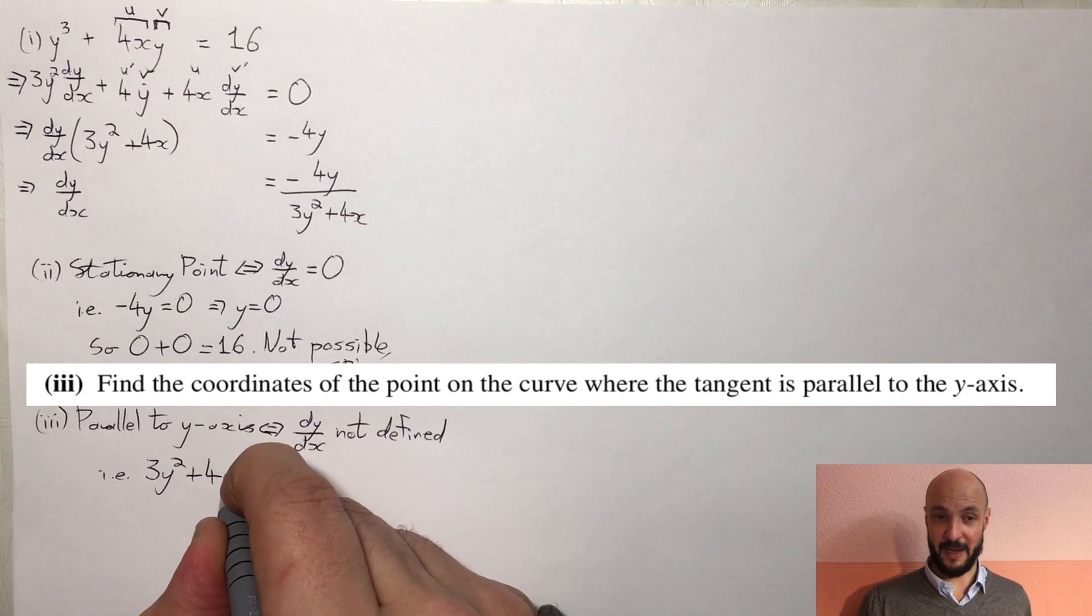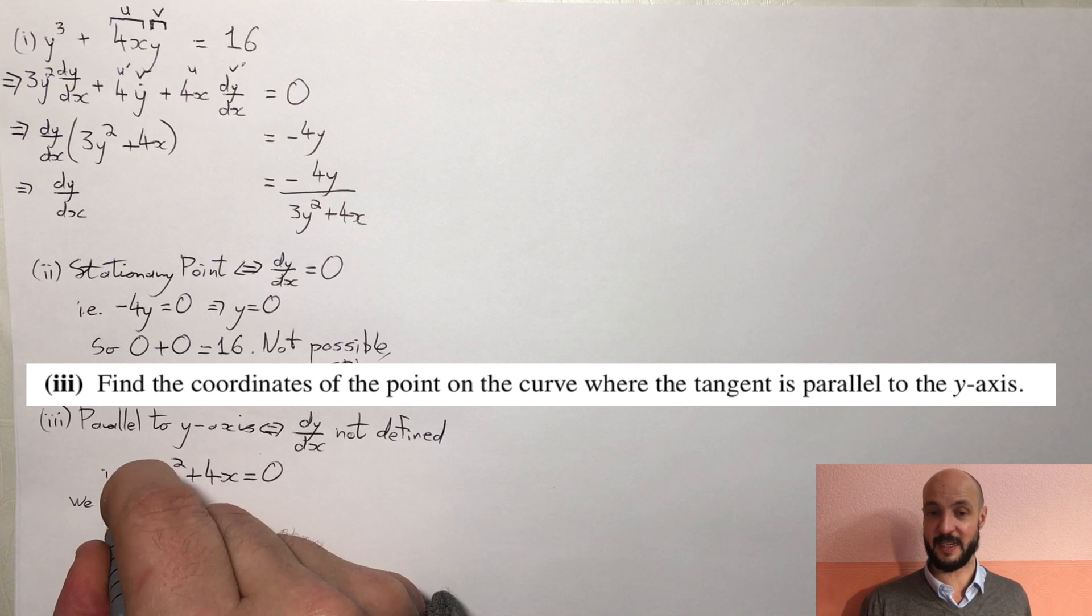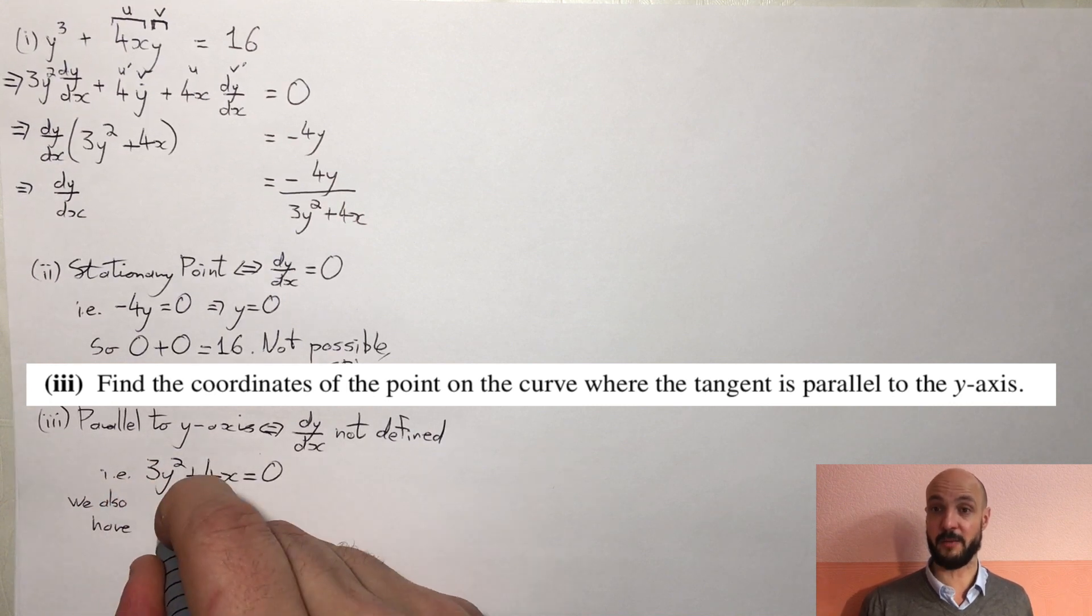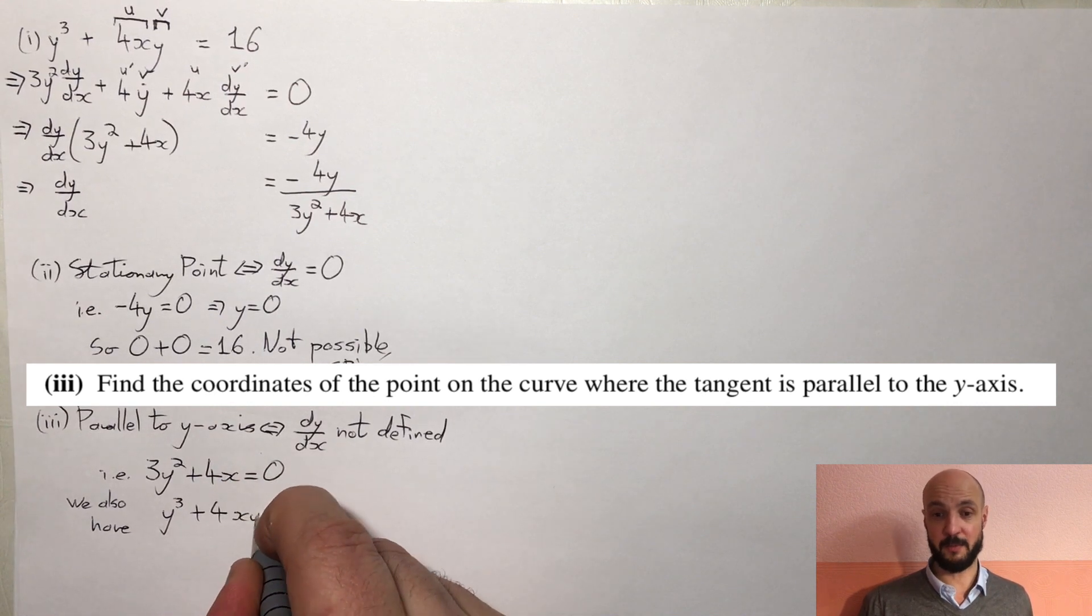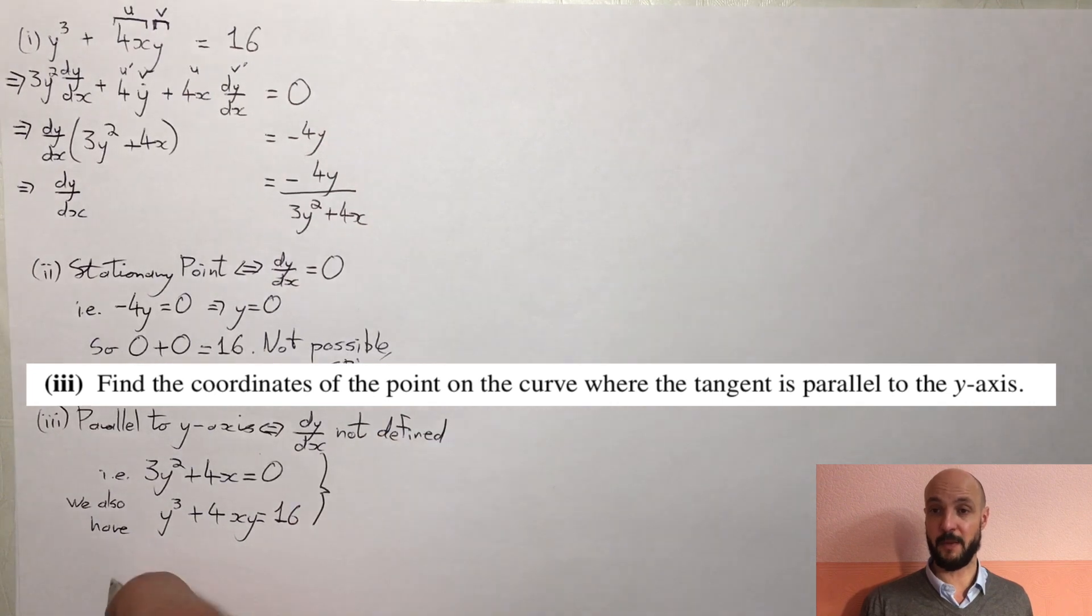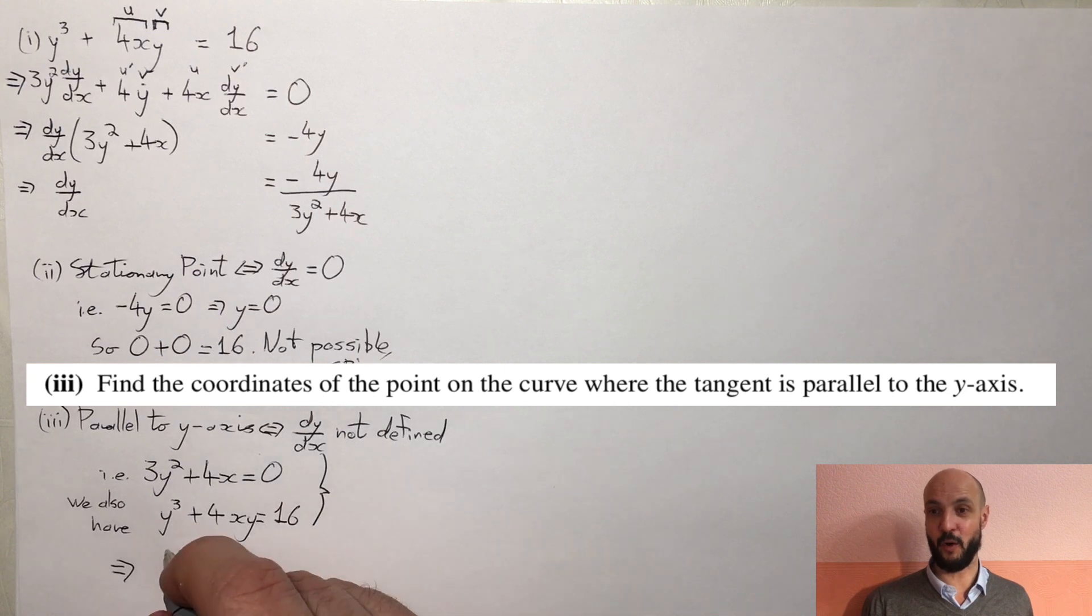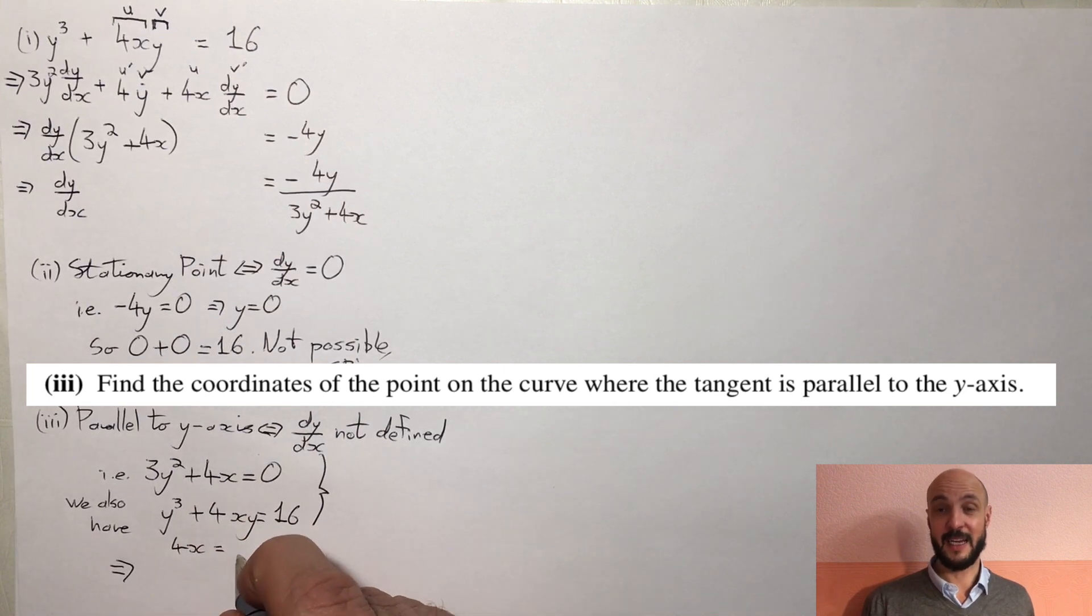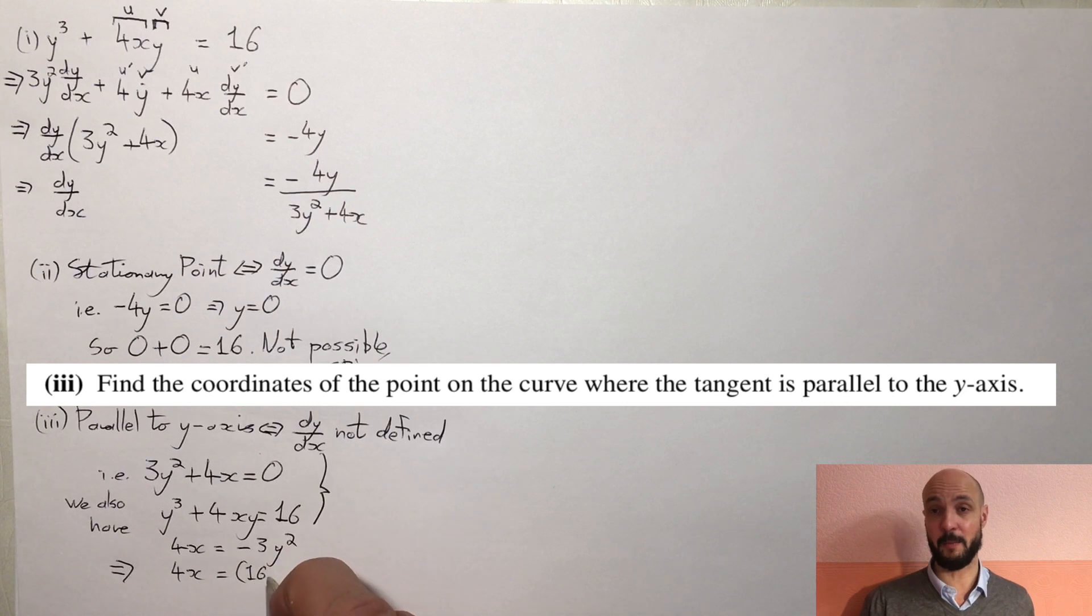Now if we combine that equation as well as our initial equation y cubed plus 4xy equals 16, we've got two equations with two variables so we can solve them to find one variable. Various ways to do it but what looks easiest to me here is to rearrange these two equations to make the subject of both 4x. So our first equation will become 4x equals minus 3y squared and our second equation 4x equals 16 minus y cubed.